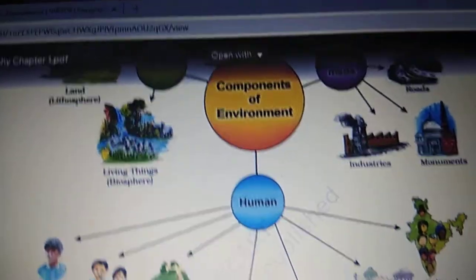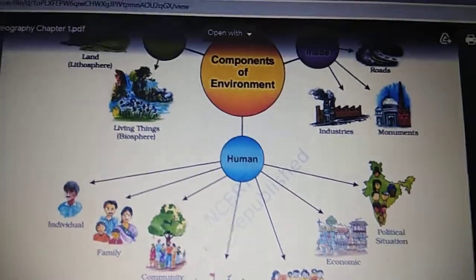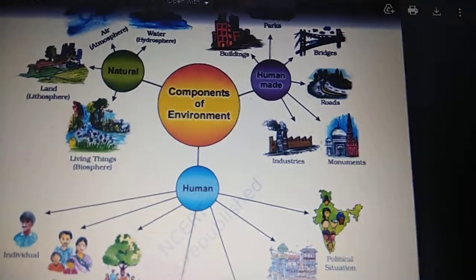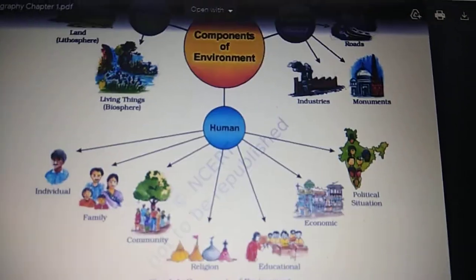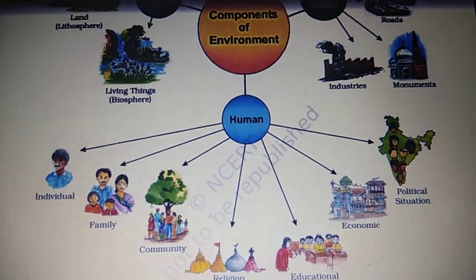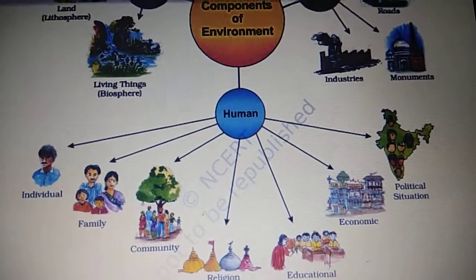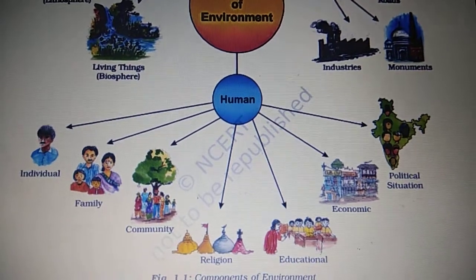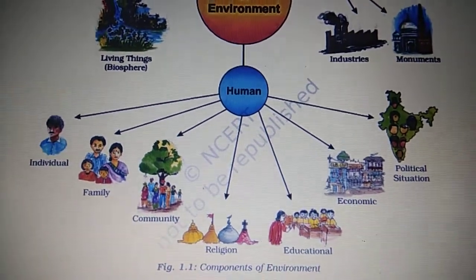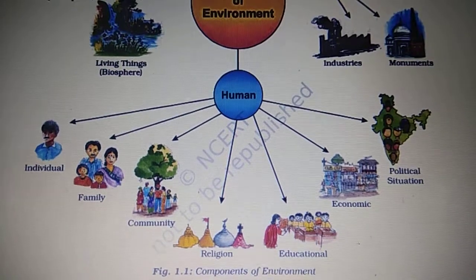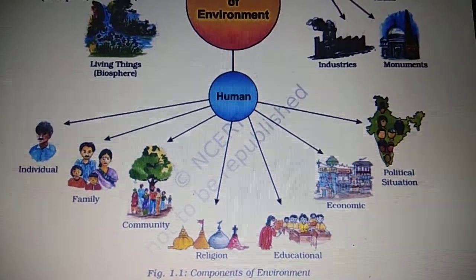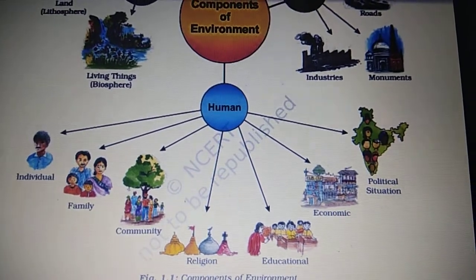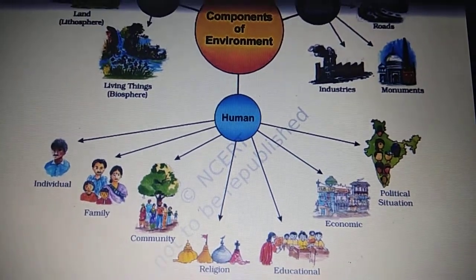So we have learnt three components. What are the three components? Natural, human-made, and human components. Under human components, we are doing all this as individuals. We work together as a family and as a community. We are divided on religious basis, we get educated, earn money, and we are also part of the functioning of the country. We all have the right to vote, so we are part of the functioning of the government.